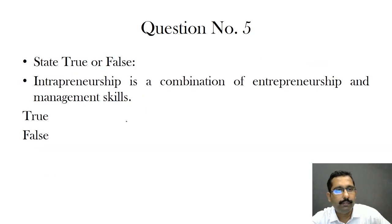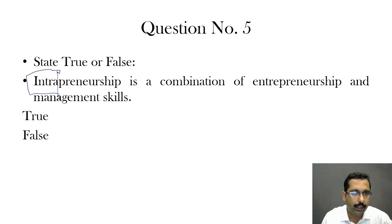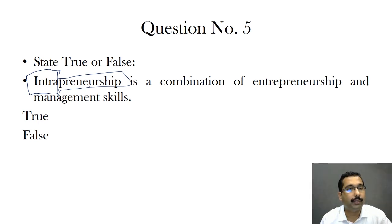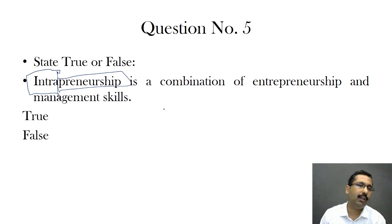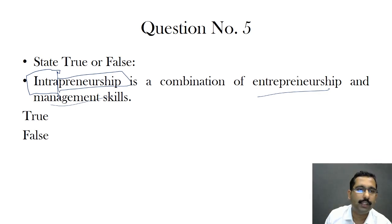Question five — state true or false: intrapreneurship is a combination of entrepreneurship and management skills. Let us understand who an intrapreneur is. The word can be divided into 'intra' meaning within, and 'entrepreneurship' meaning doing something on your own. So an intrapreneur is an employee of an organization who thinks and works and acts like an entrepreneur within that organization. This requires both entrepreneurial skills and management skills, so the statement is true — the answer is option A.